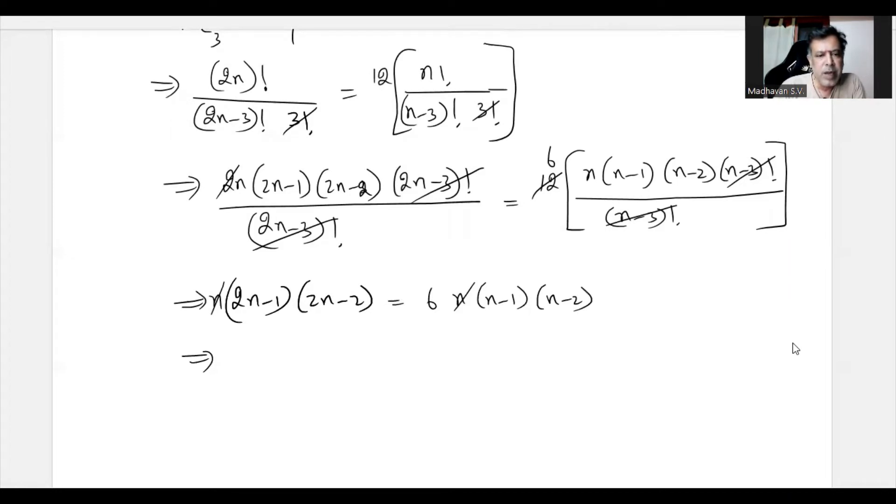If I expand the left-hand side, it becomes now 4N² - 4N - 2N + 2 is equal to 6 times N² - 2N - N + 2. Further, it can be simplified as 4N² - 6N + 2 is equal to 6N² - 3N, 3 times 6 is 18N plus 12.